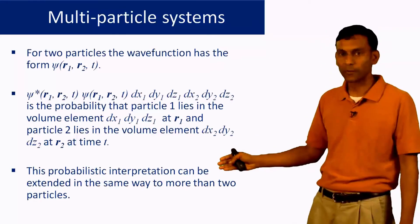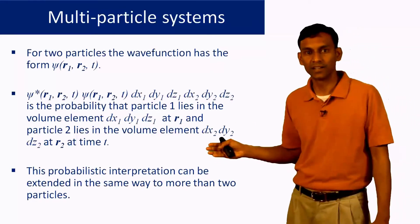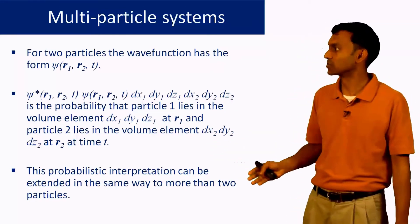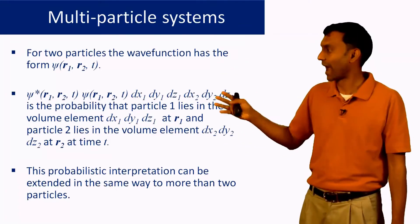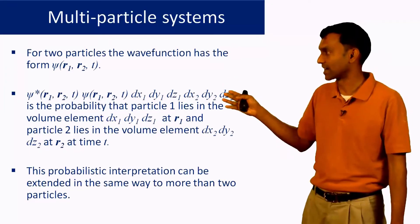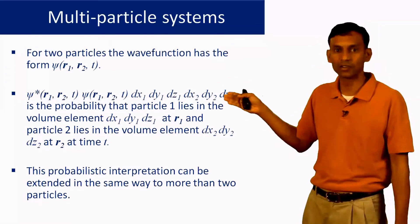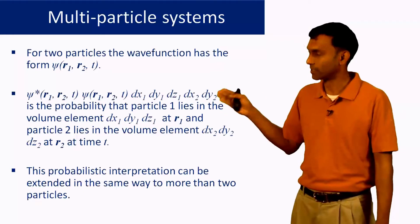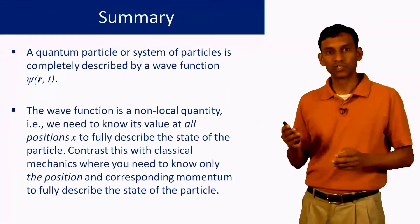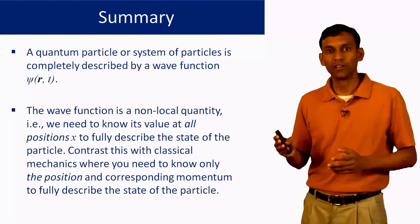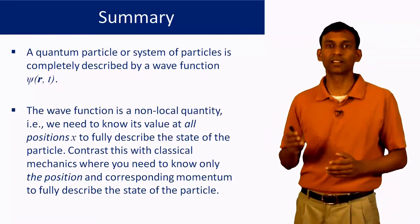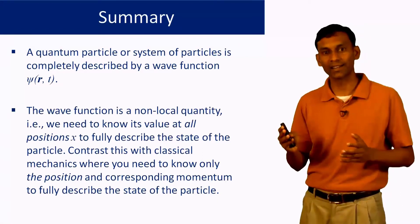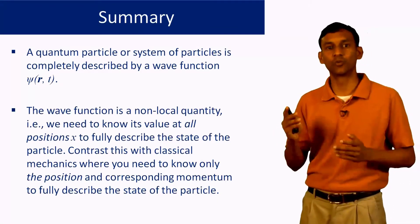This probabilistic interpretation can easily be extended to more than two particles. You just have to add a new position variable R3 for the third particle, for example, and then the probabilistic interpretation is extended in a way very similar to this two-particle interpretation. So in summary, for any quantum system, the wave function is the quantity that completely describes the system, and that is the content of postulate 1.